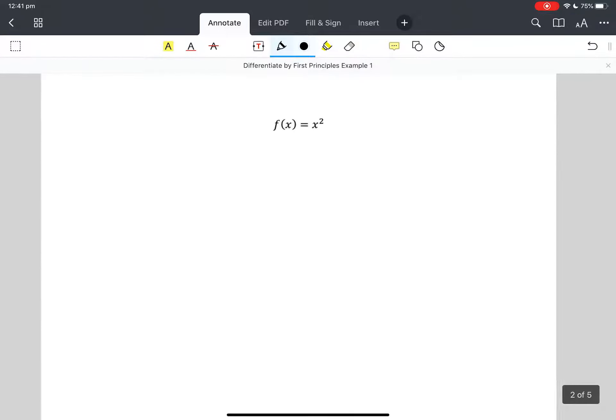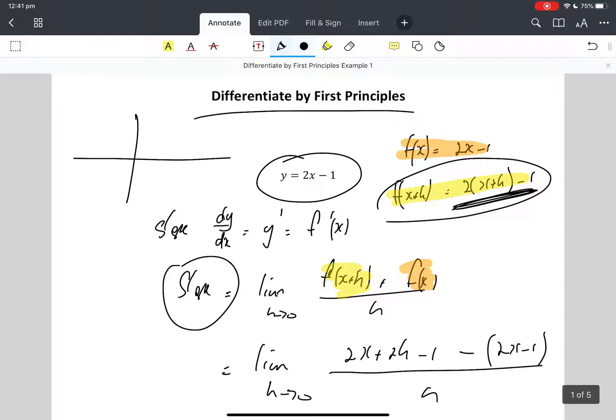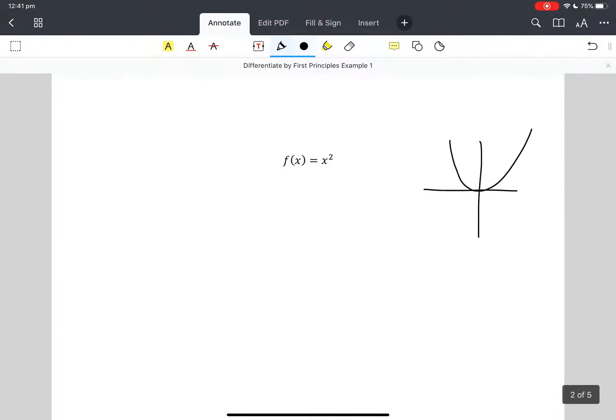Let's look at another one where it won't just cancel out to a number, because a parabola, the slope changes, doesn't it? Whereas with y equals 2x minus 1, it's just a slope of 2, no matter where you look.